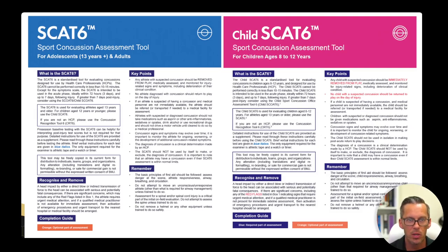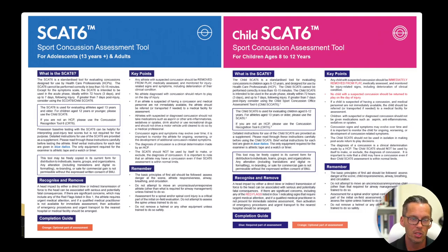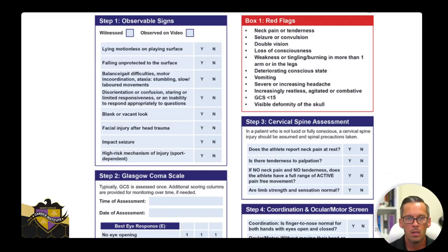For criterion two, we can get a lot of information from the SCAT. Here's the SCAT-6 and Child's SCAT-6 — these are the front pages of the two tools. The SCAT-6 is for 13 years and older and adults. The Child's SCAT-6 is for ages 8 to 12, with different questions and a different mechanism of delivery. They are different enough that they made two separate tools, and you should not administer the SCAT-6 to a child or the Child's SCAT-6 to someone 13 or older.